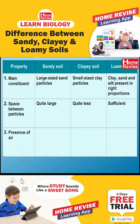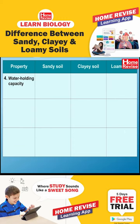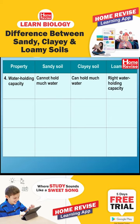Three: presence of air — sandy soil is well aerated, clay soil is not well aerated, and loamy soil can hold sufficient air. Four: water holding capacity — sandy soil cannot hold much water, clay soil can hold much water, and loamy soil has the right water holding capacity.